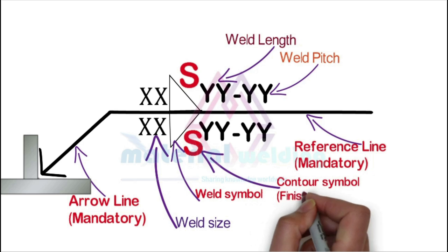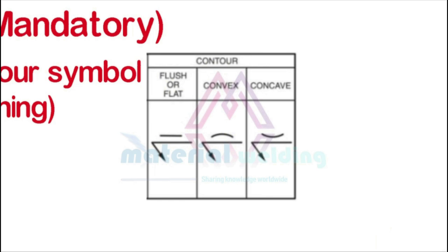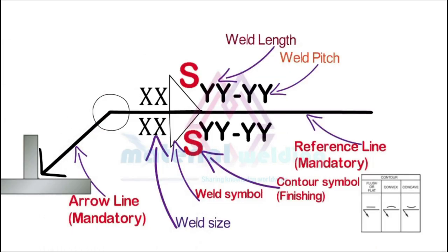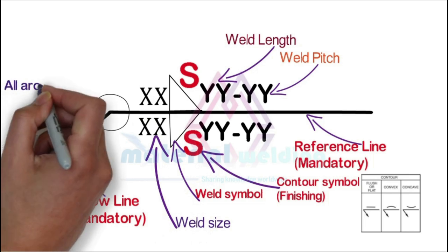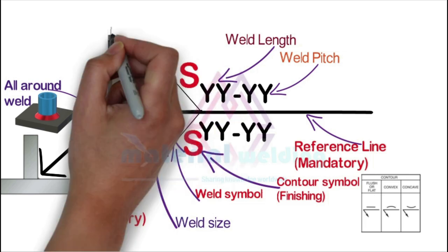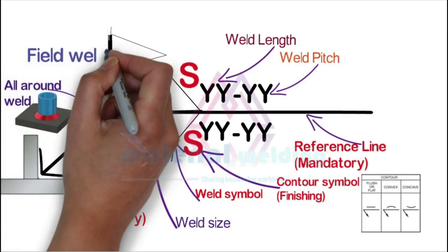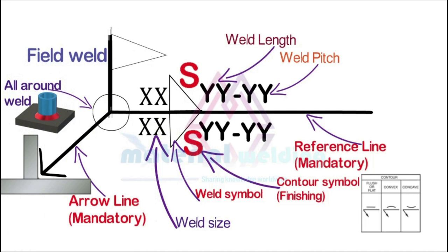Examples of contour or profile symbols are concave weld, convex weld, or flat weld — they show the final surface requirements for the weld. The all-around weld symbol is used where welding has to be made all around the joint, for example full welding of a pipe placed vertically on a plate. The field weld symbol is used where welding has to be made at the site — for example, joining big pipe spools at the field instead of welding at the fabrication shop due to difficulty in shifting long lengths to the site.